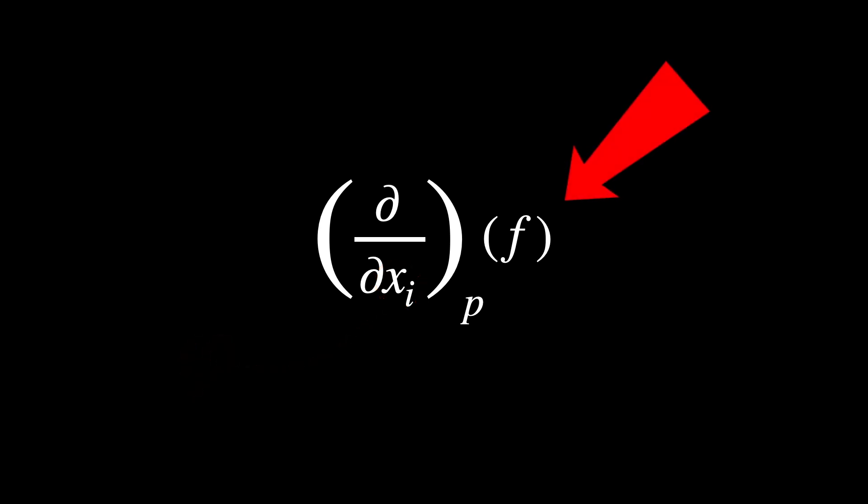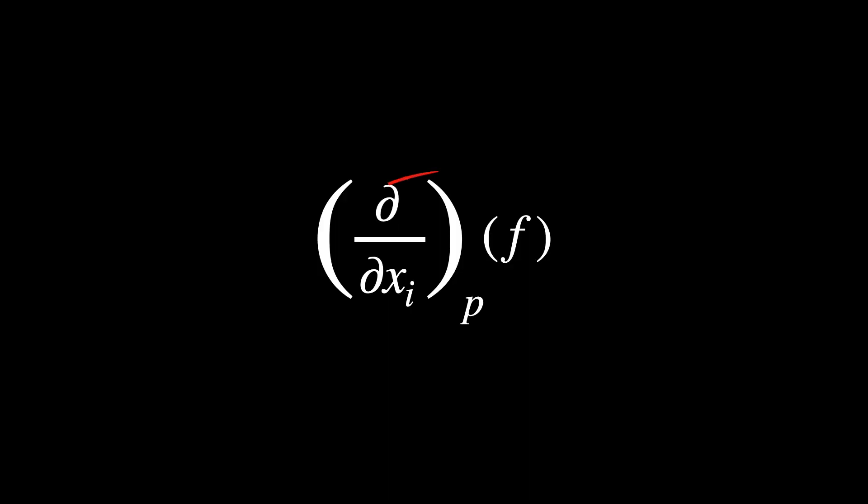And what is the F? It was an arbitrary test function. We just needed it in the calculations to get us where we got to. You can pick literally any differentiable function F. It doesn't really matter what it is. We only needed it to define the basis of the tangent space. So it was so arbitrary that we can actually get rid of it now.